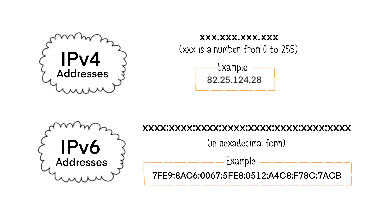Today, many ISPs offer both IPv4 and IPv6 internet access simultaneously. If compatible, your equipment probably has an IP address of each type to browse the internet and watch this video.